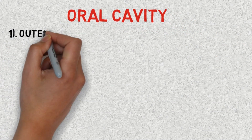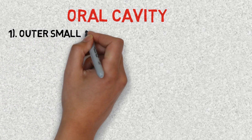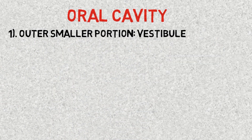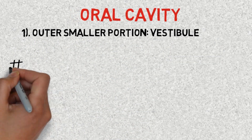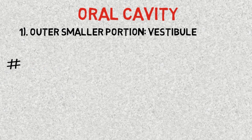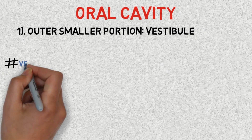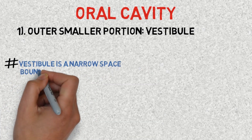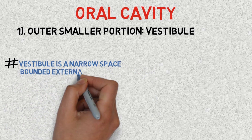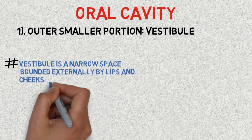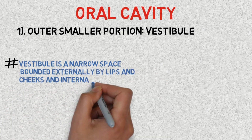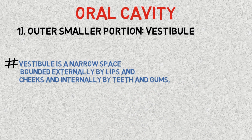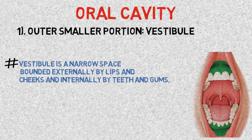The vestibule is a narrow space which is bounded externally by the lips and cheeks, and internally by the teeth and gums. As we can see in the diagram, the green portion indicates the vestibule.